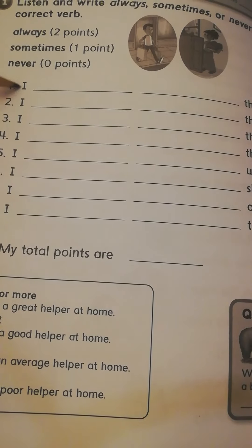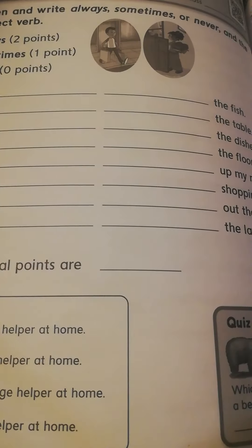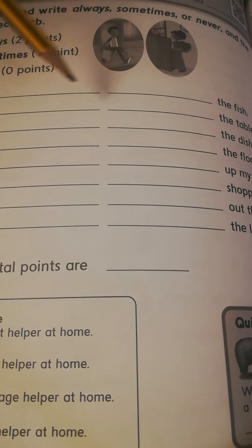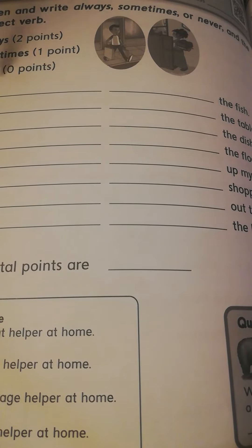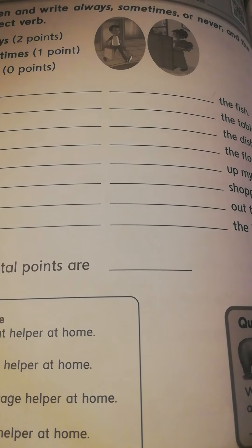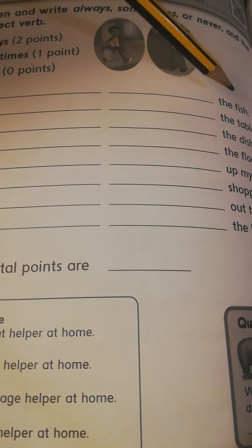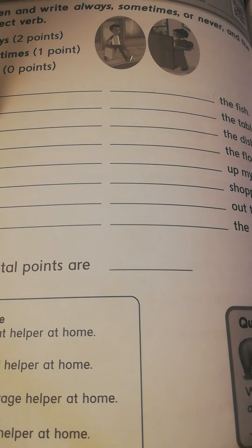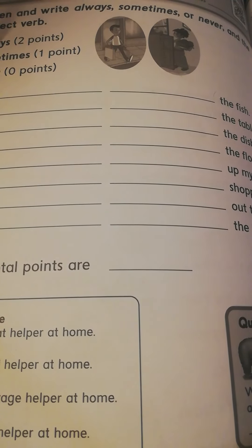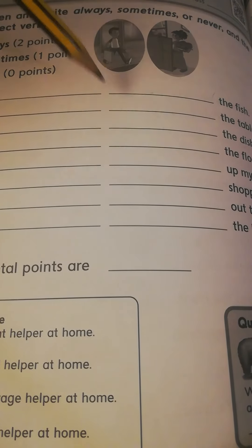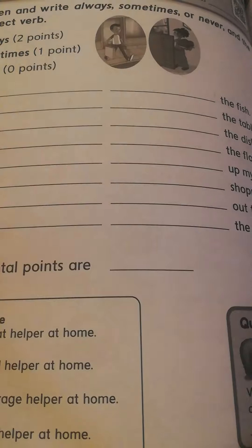Listen and write always, sometimes, or never. رقم 1: I تختار الفعل اللي هو feed the fish. مثلاً: I never feed the fish — أنا ما أطعم السمك أبداً. رقم 2: I sometimes set the table — أنا أحياناً أرتب السفرة. رقم 3: I always clean the dishes — أنا دائماً أنظف الصحون. بعدين تكتب المجموع اللي حصلت عليه.